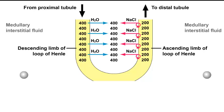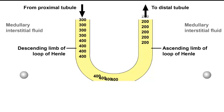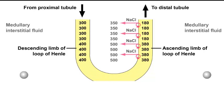Water moves passively out from the descending limb until the osmolarity of the fluid in the descending limb and the interstitial fluid become the same. Now advance the entire column of fluid.